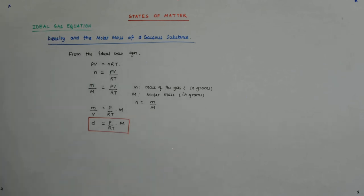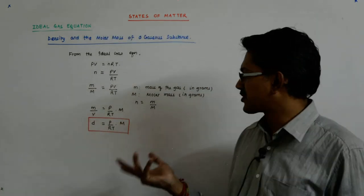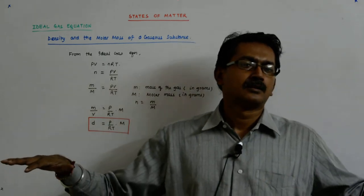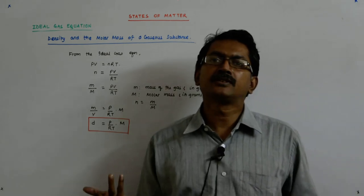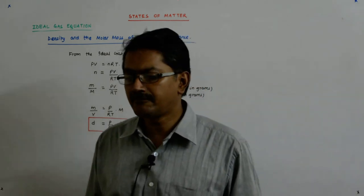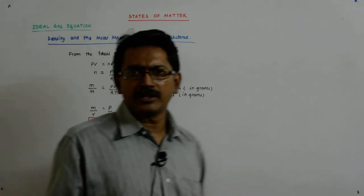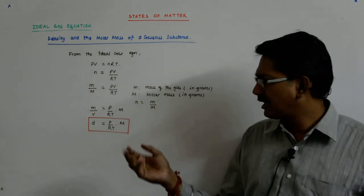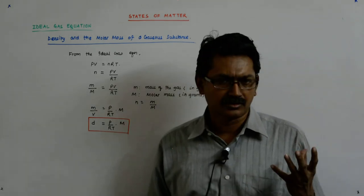Which is what? It tells you that density is directly proportional to the molar mass at the same pressure and temperature. So if you have so many gases at the same pressure and temperature, then the gas with the higher molar mass will have a higher density. Now that is something that is not so intuitive, but this tells you that, and that is the power of the simple equation.